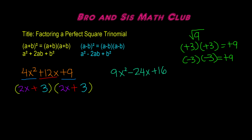So our result of factoring 4x² plus 12x plus 9 is (2x + 3)(2x + 3), or simply (2x + 3)². Our result is the square of a binomial, and if we square this binomial, we will get 4x² plus 12x plus 9.